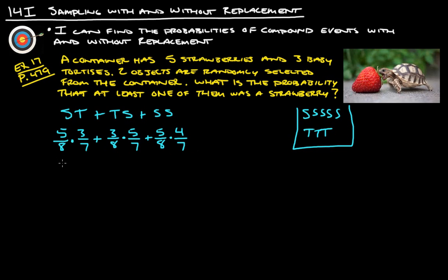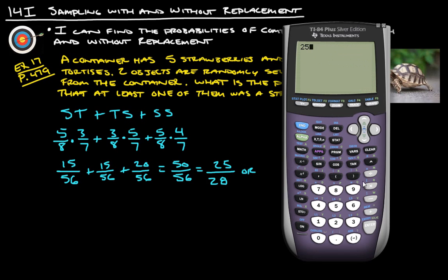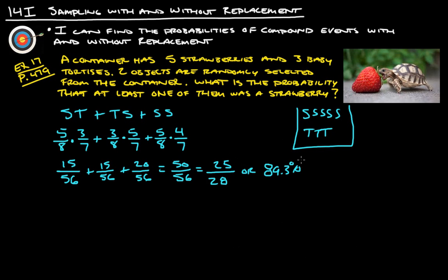So we calculate: five-eighths times three-sevenths is fifteen over fifty-six; plus three-eighths times five-sevenths is fifteen over fifty-six; plus five-eighths times four-sevenths is twenty over fifty-six. That's fifteen plus fifteen plus twenty over fifty-six, which is fifty over fifty-six. Dividing both by two gives twenty-five over twenty-eight. Converting: twenty-five divided by twenty-eight equals 89.3%. Either the fraction twenty-five over twenty-eight or 89.3% would work as the answer. You should now be able to say: I can find the probabilities of compound events with and without replacement. If you have any questions, please ask.